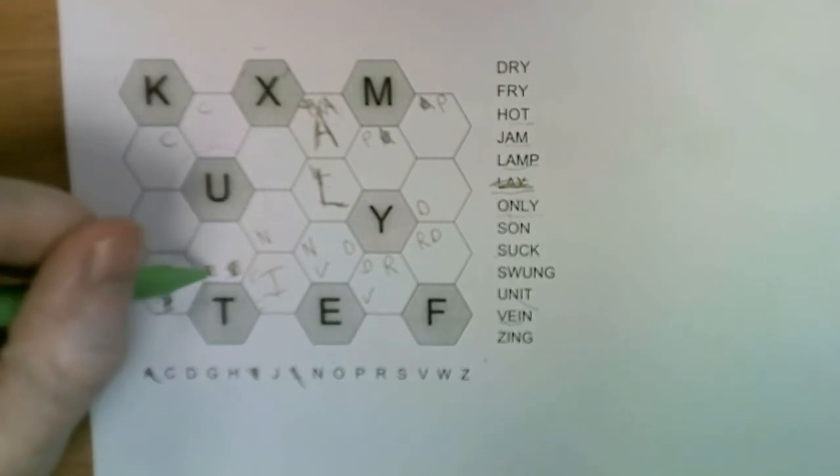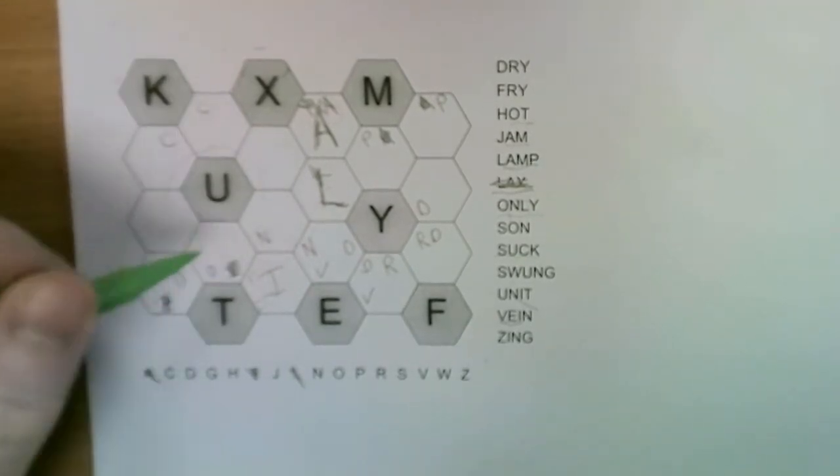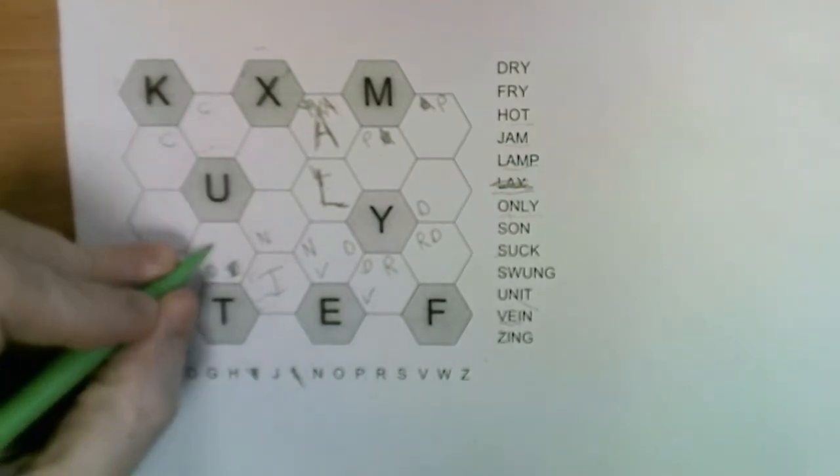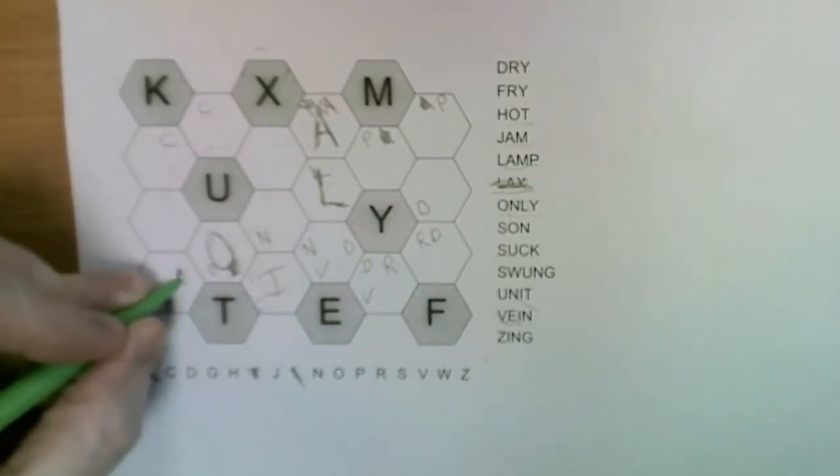Then we have lamp here or lamp there. Now the O neighbors the N, so the only O that neighbors an N is this one here. So that must be the O.